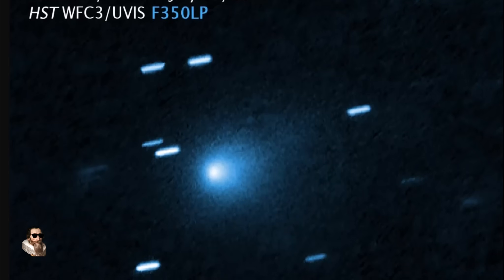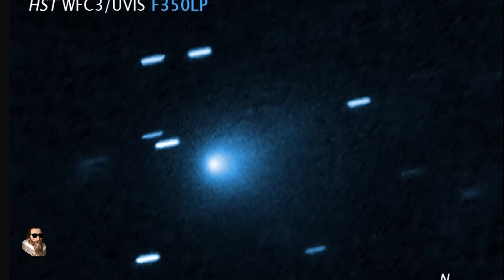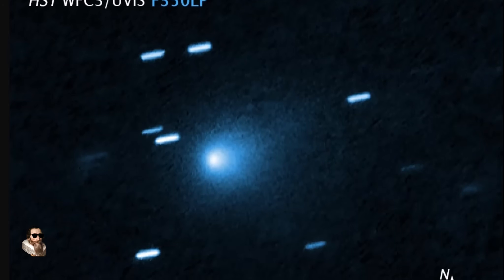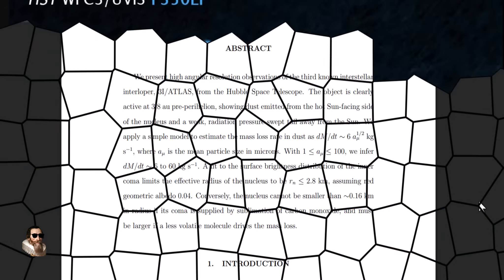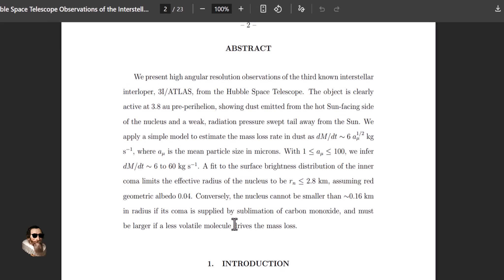Instead of material ejecting away from the sun in a cometary tail, this object has material ejecting towards the sun, and this is as if this object is ejecting material to slow itself down. And Avi Loeb said this week that this object may have its own light source.